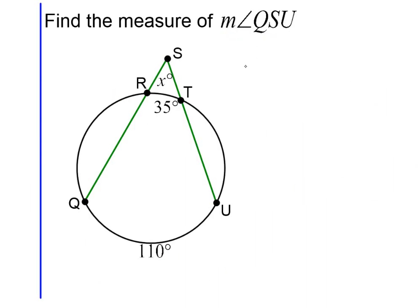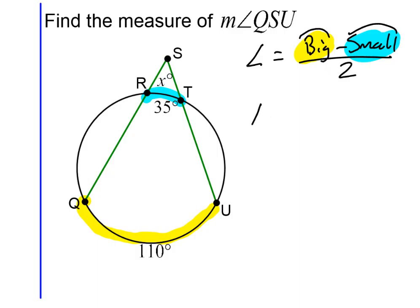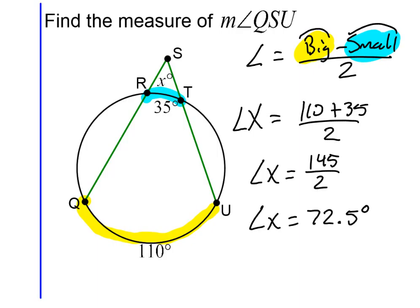Let's try this example. So our formula is that the angle is equal to the big arc minus the small arc divided by 2. My big arc is 110 degrees. My small arc is 35 degrees. Let's plug them in. So my x angle is going to be equal to 110 plus 35 divided by 2. 110 plus 35 is 145 divided by 2. So my answer is 72.5 degrees from 145 divided by 2.